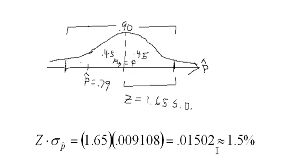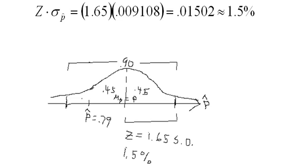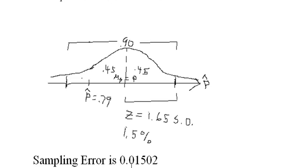And we get 0.01502, or about 1.5%. So now we know this. By the way, this 0.01502 is called the sampling error.